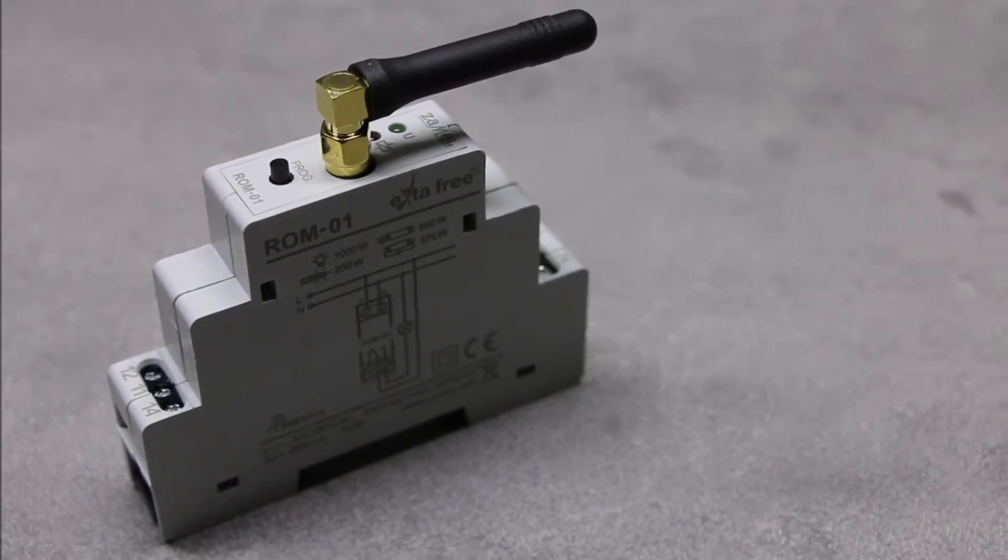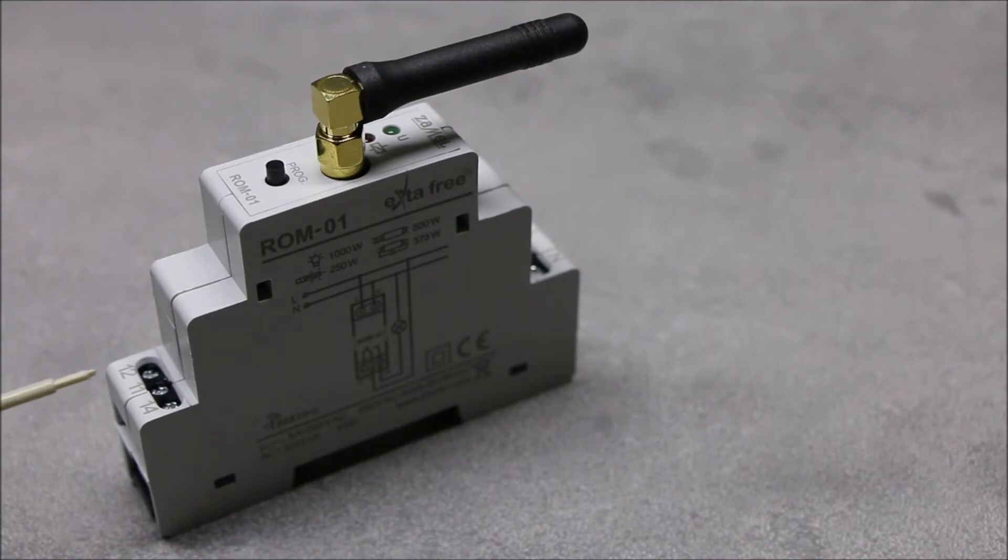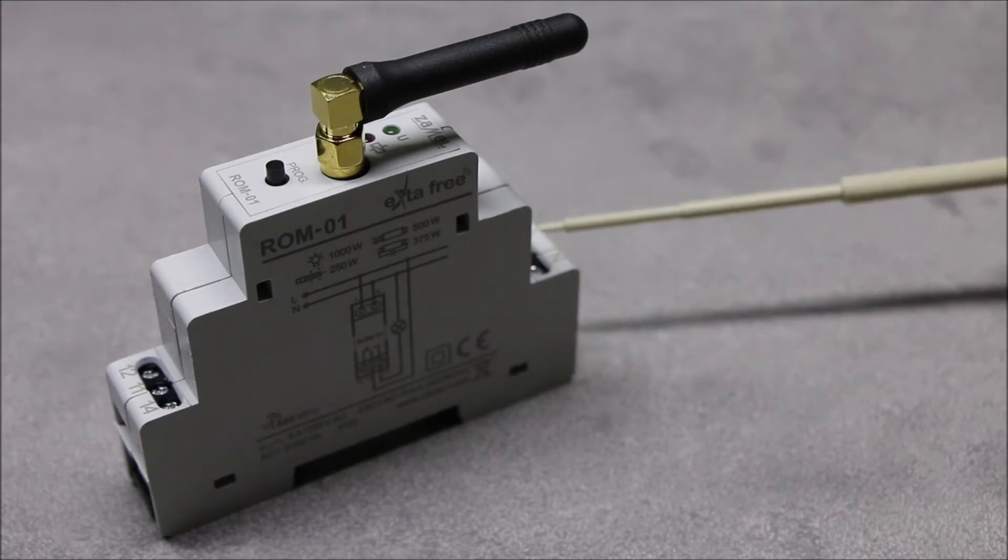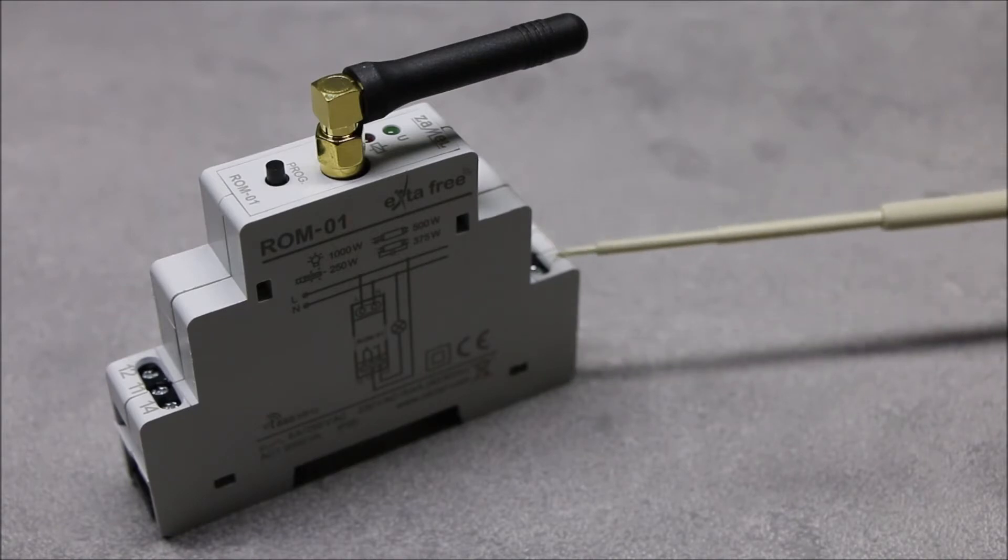The receiver outputs are switching relay voltage-free with maximal load of 16 amperes for devices supplied with 230 volts. ROM01 requires voltage supply in the range between 190 and 250 volts AC.